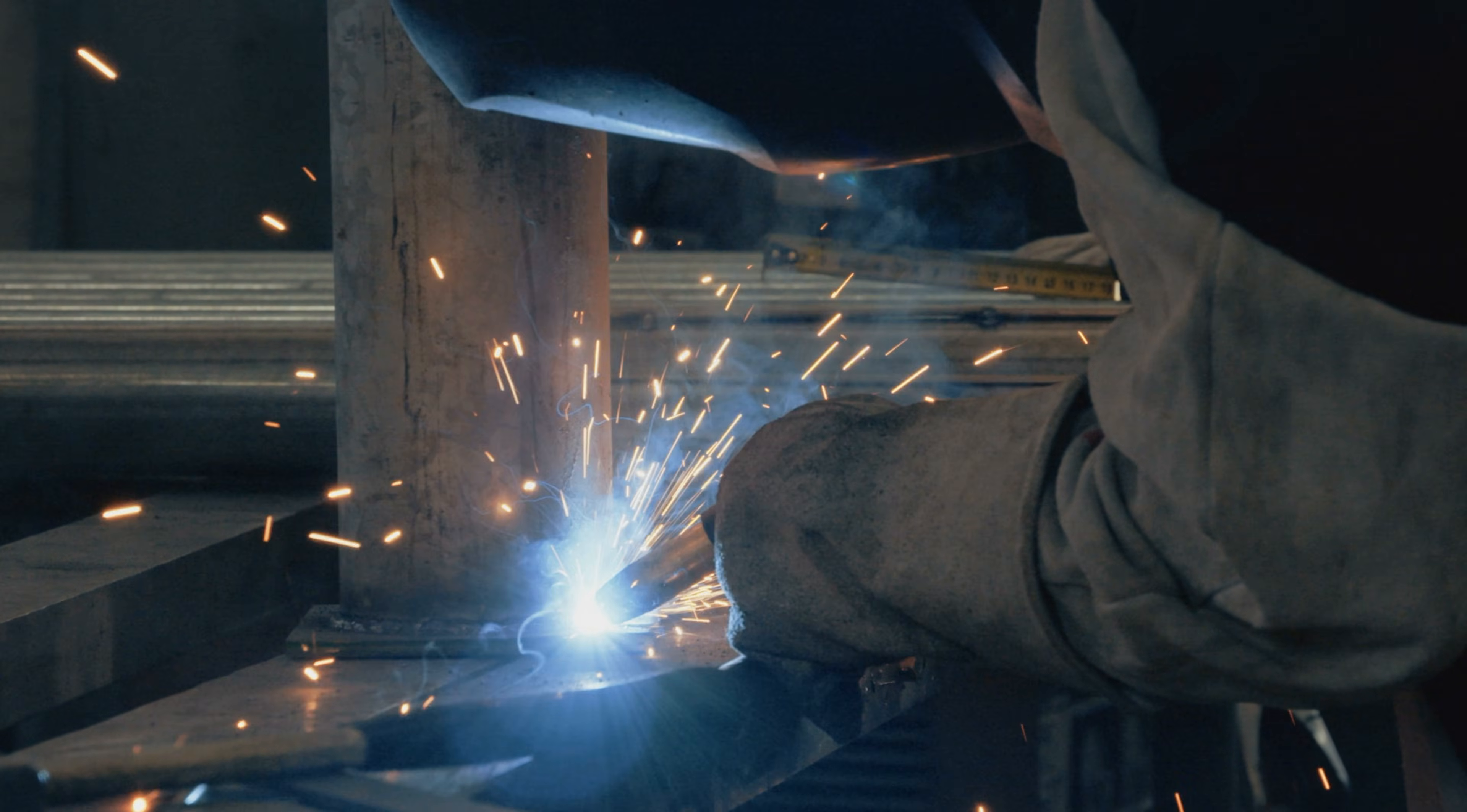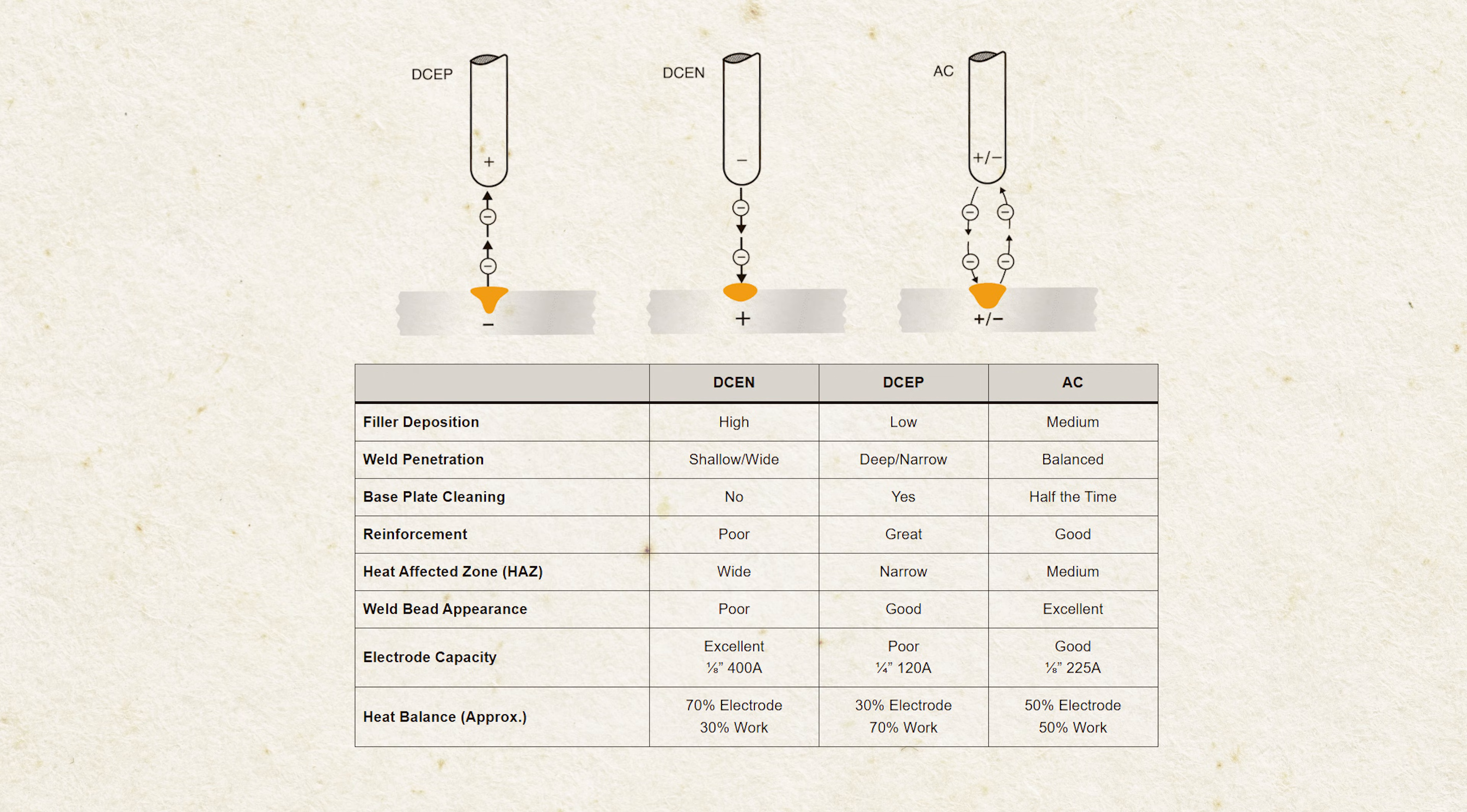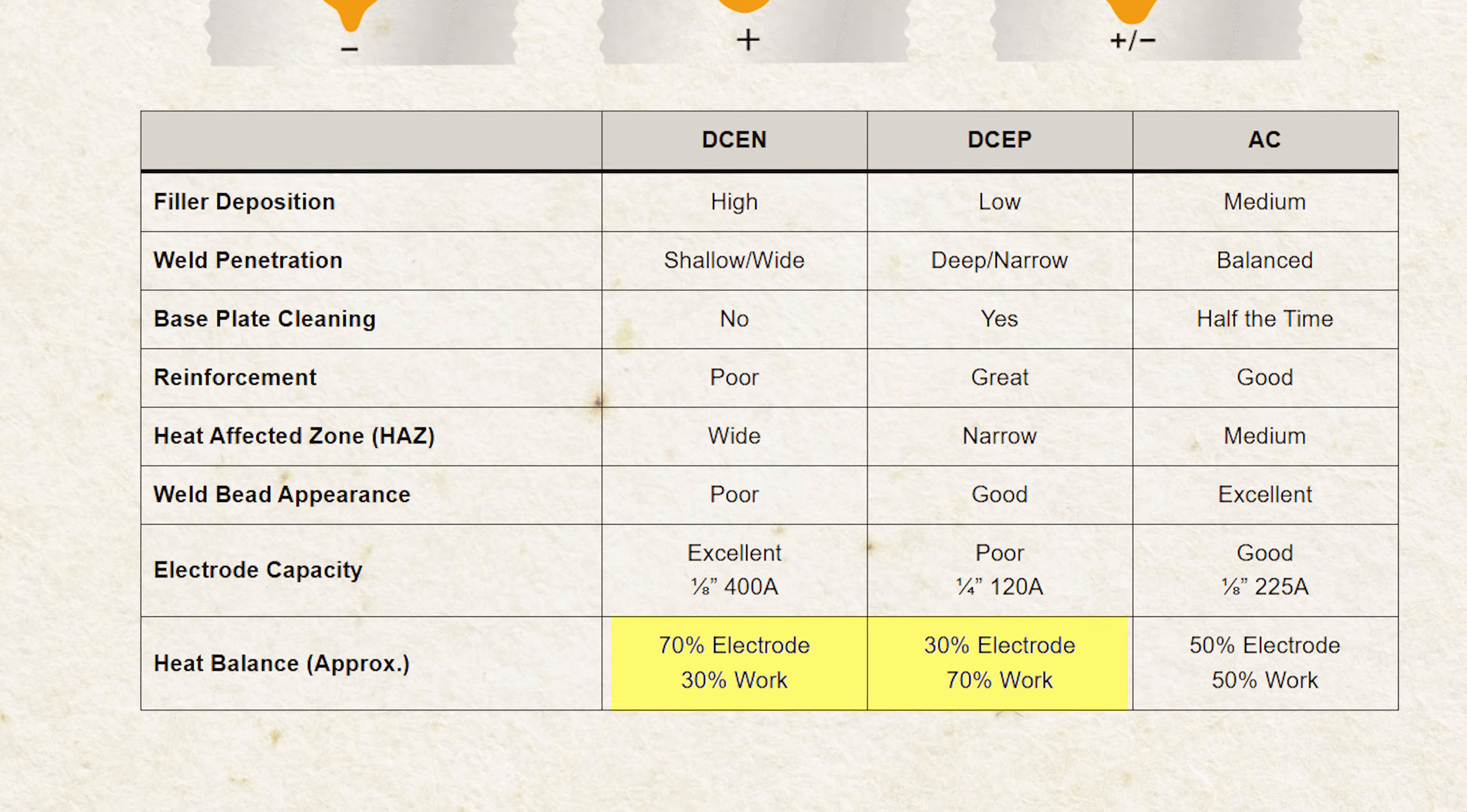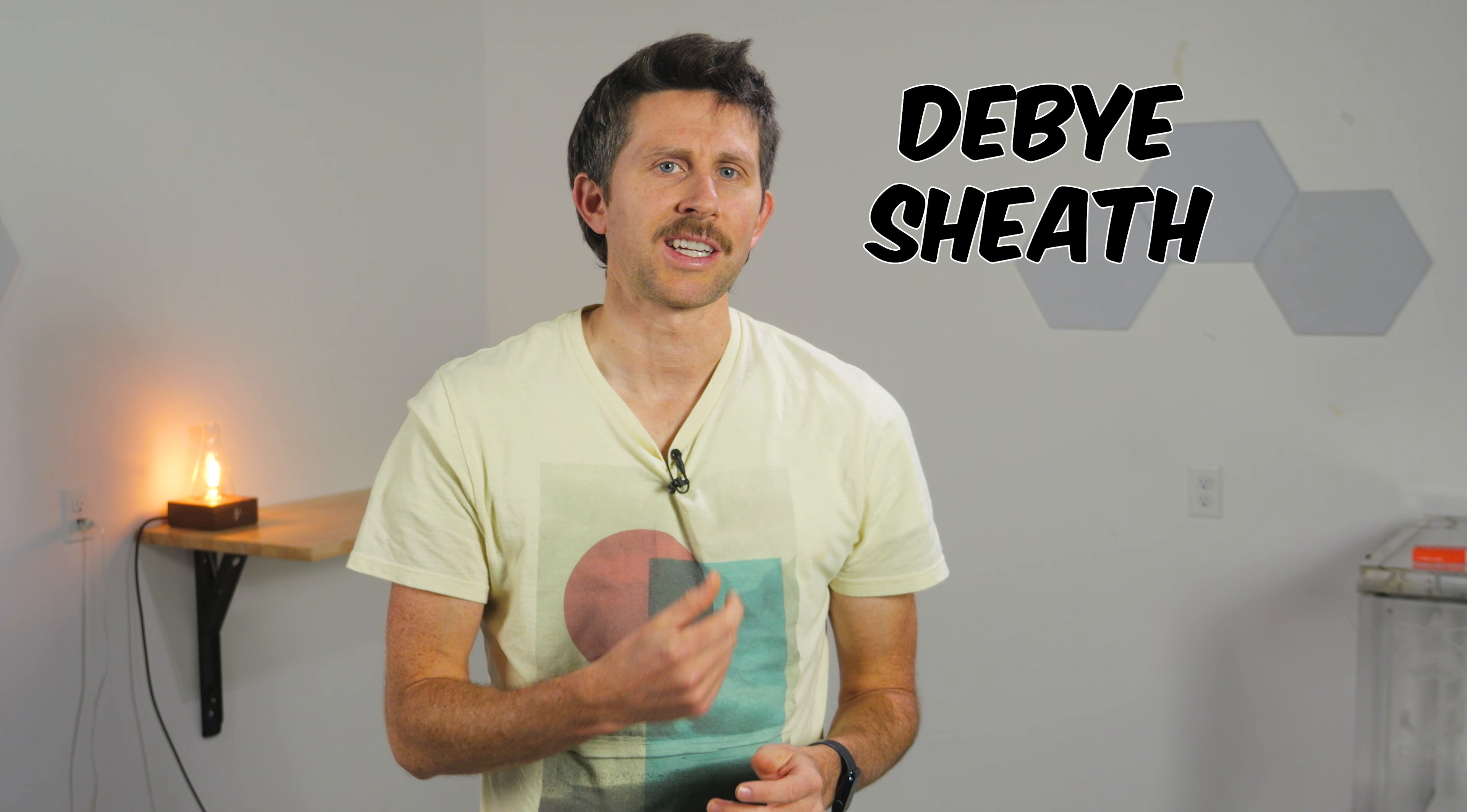But then I remembered about welding. If you use a DC current, then the negative electrode or cathode will get about 70% of the heat and the positive piece will get about 30% of the heat. The reason is due to something called a Debye sheath.